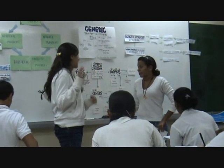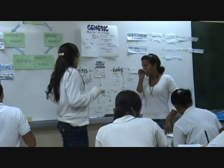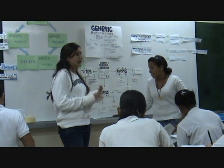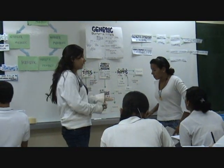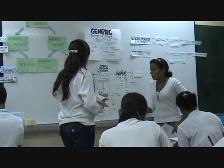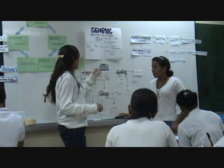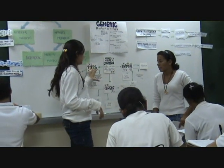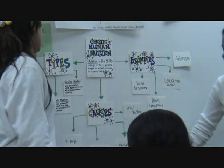A mutation is a changing sequence in the DNA, and this could happen in plants, in humans, or even animals. Our diagram is divided into three parts: types, causes, and examples.